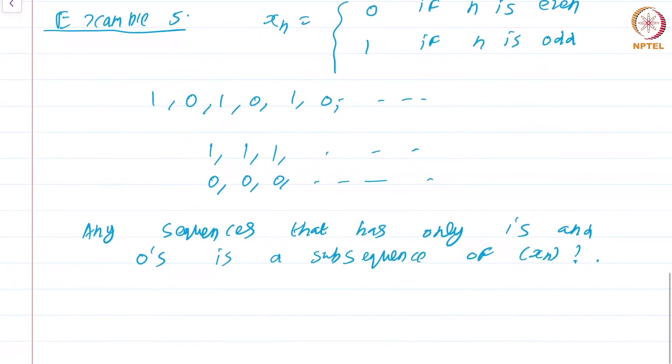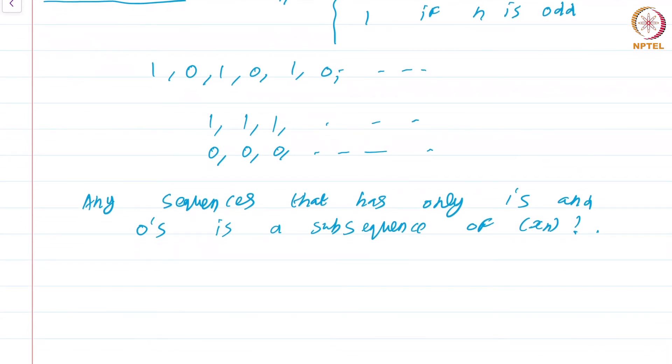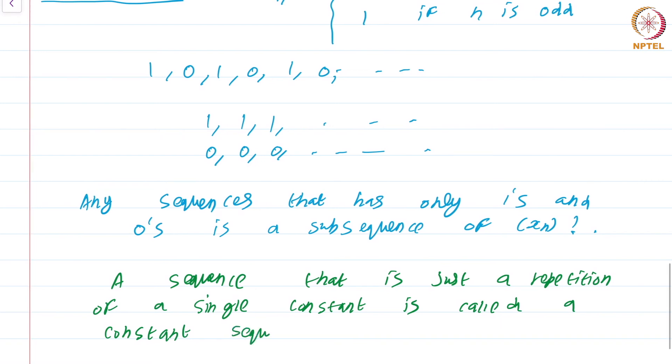These two subsequences 1, 1, 1, 1 and 0, 0, 0, 0 are interesting. These are known as constant subsequences. A sequence that is just a repetition of a single constant is called a constant sequence.